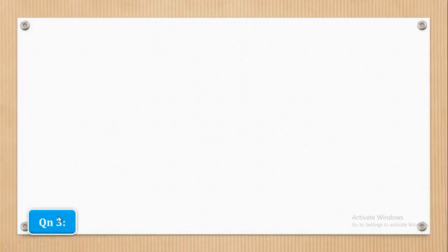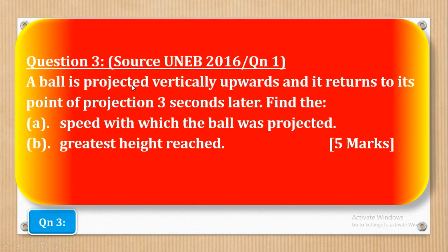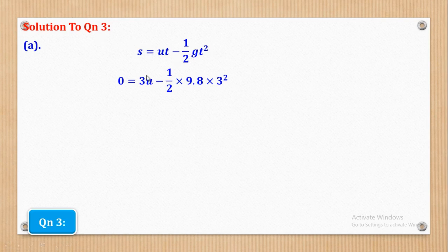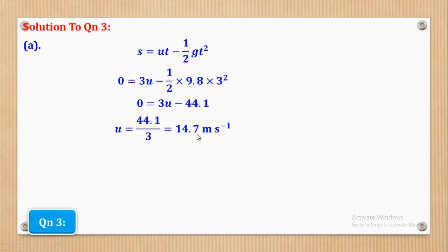Question 3 says: A ball is projected vertically upwards and it returns to its point of projection 3 seconds later. Find: Roman numeral 1, the speed with which the ball was projected, and Roman numeral 2, the greatest height reached. For part A, we use the second equation of motion S = UT − ½gT². The time is 3, G is 9.8. With only one unknown U, solving gives U equal to 14.7 meters per second.